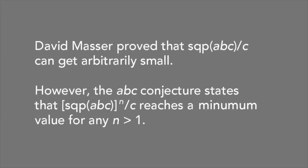David Masser proved that the ratio of the square-free part of ABC over C can get arbitrarily small. In other words, given any number greater than 0, no matter how small, it's possible to find integers A and B for which the square-free part of ABC over C is smaller than this number.